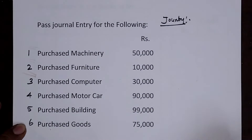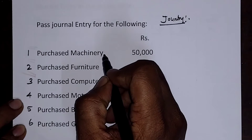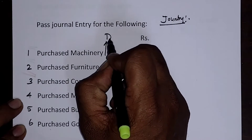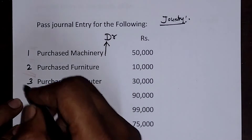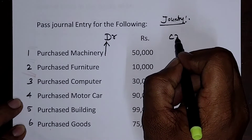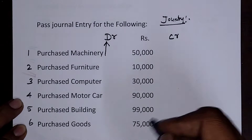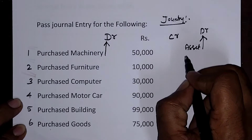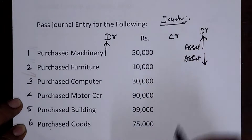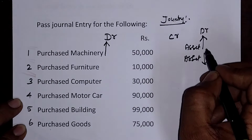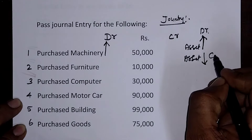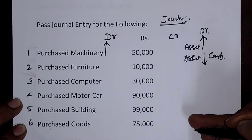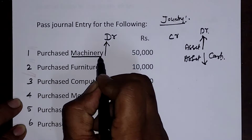Various assets are arriving into the business and cash is going out. The simple concept is: whatever is entering or coming into the business, write it into the debit, and what is going out of the business, write it into the credit. As per the modern accounting system, asset increase appears in the debit and asset decreasing appears in the credit. The various assets are coming in and cash is going out, so cash will appear in the credit and other assets will appear in the debit.